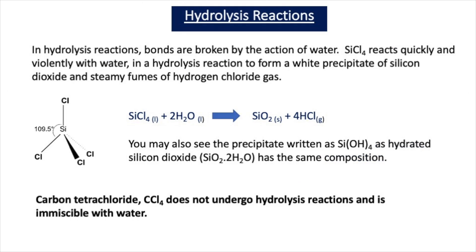Let's look at what we mean by the term hydrolysis. In hydrolysis reactions, bonds are broken by the action of water. SiCl4, silicon tetrachloride, reacts quickly and violently with water in a hydrolysis reaction. A white precipitate of silicon dioxide and steamy fumes of hydrogen chloride gas are produced. The chemical equation is: SiCl4 + 2H2O → SiO2 + 4HCl.